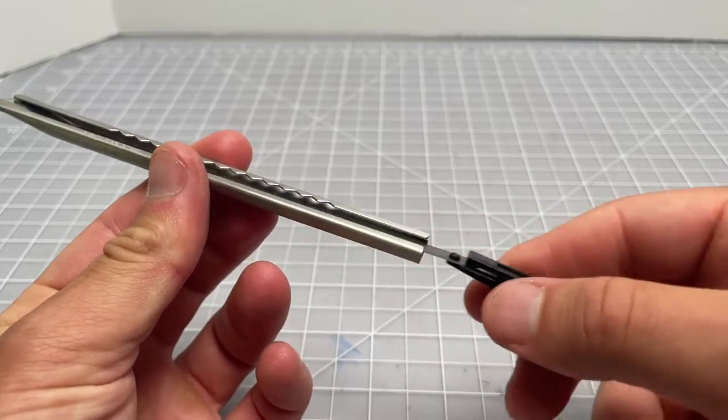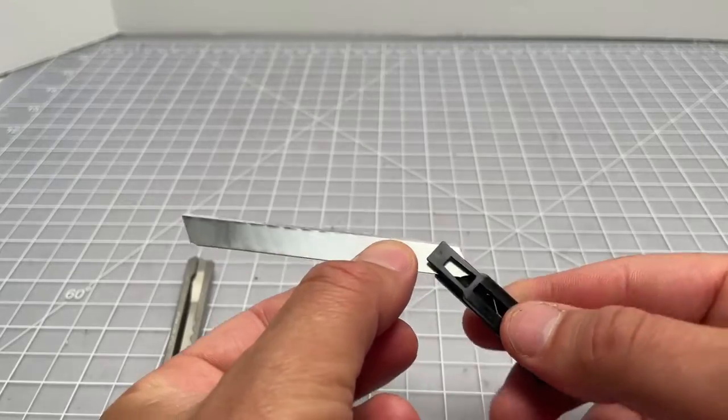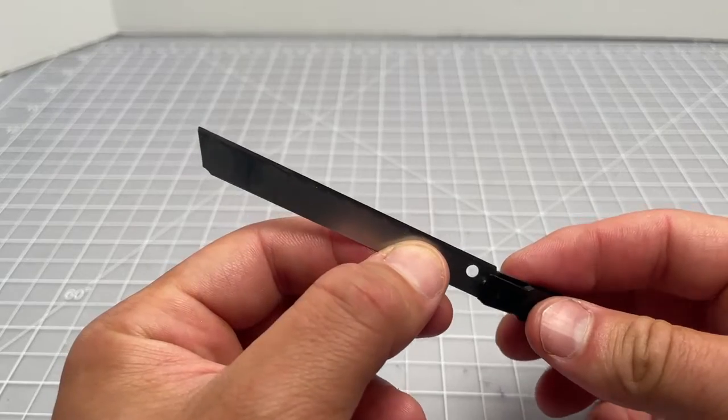Pull it, and now you have two separate components. You have your blade component and the plastic clip. You unclip this piece, put the new one in.